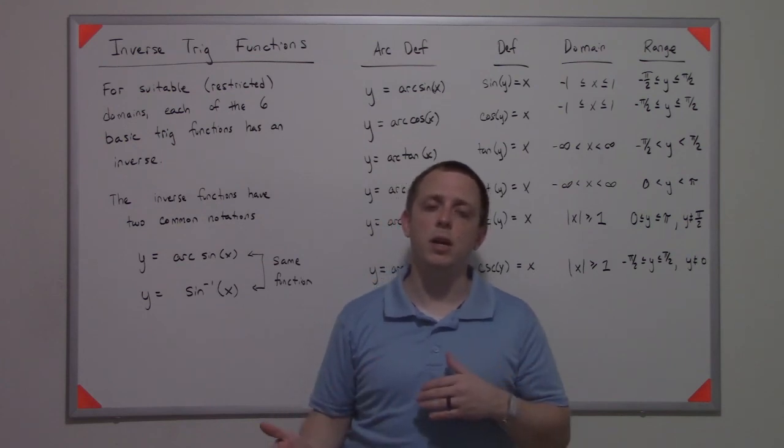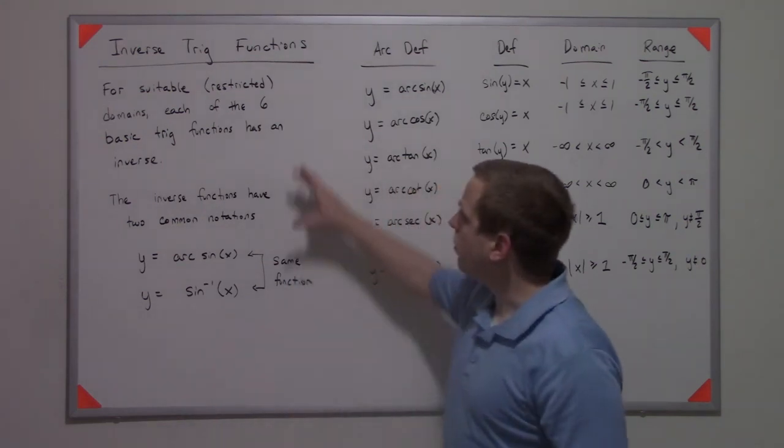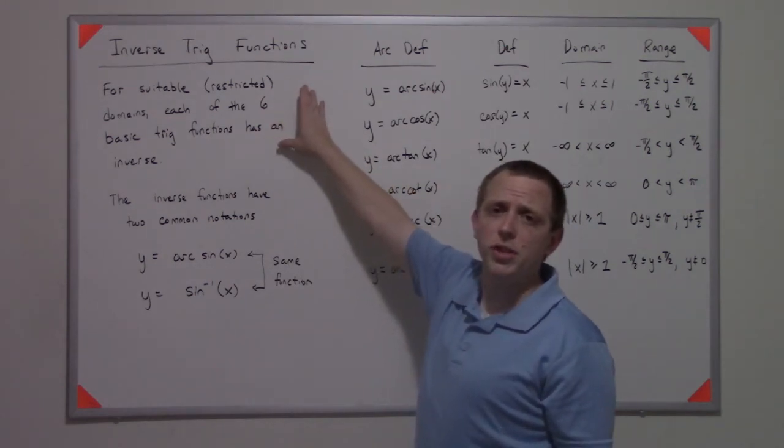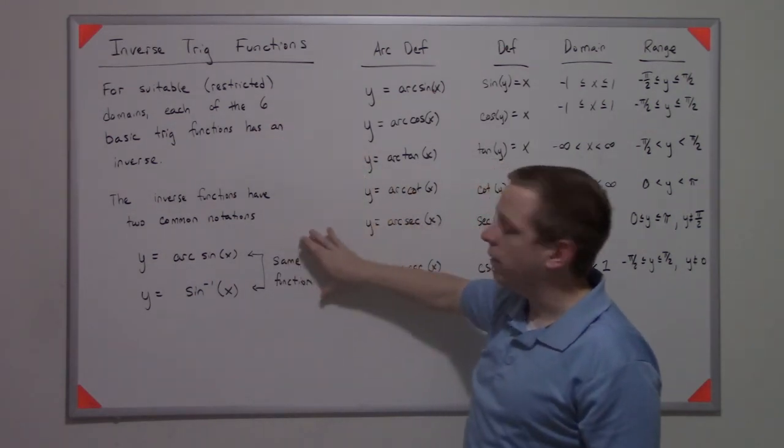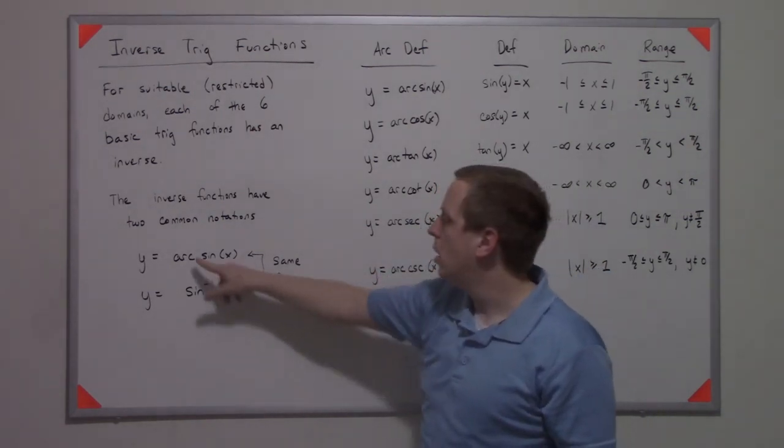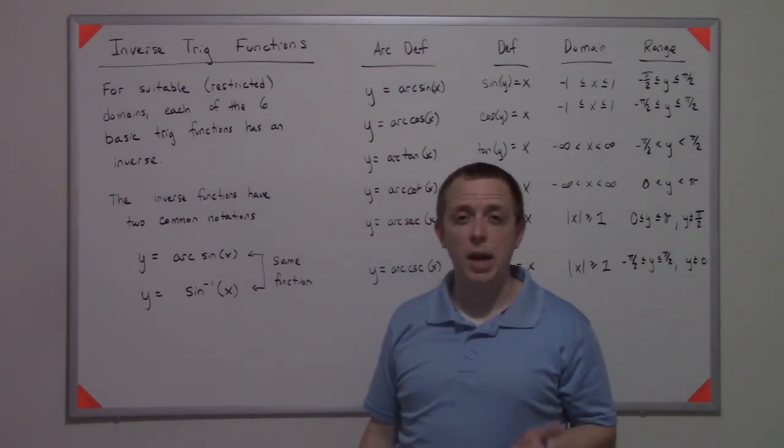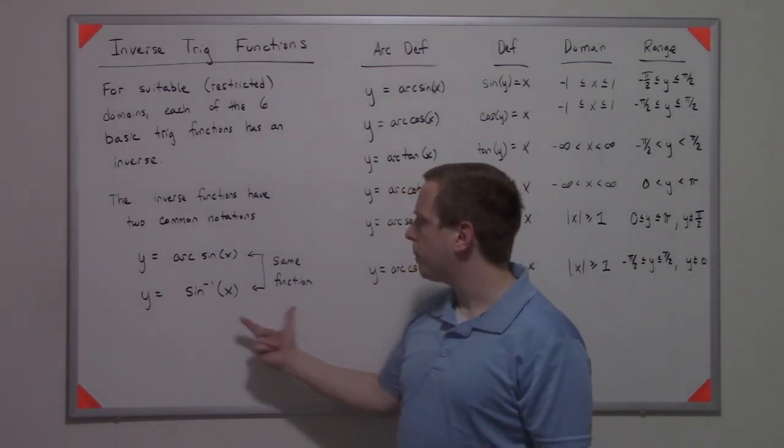Since it's one-to-one, you can develop the idea of an inverse function. This is true for all the six basic trig functions. The two common notations you'll see are either sine to the negative one of x, or arcsine of x.